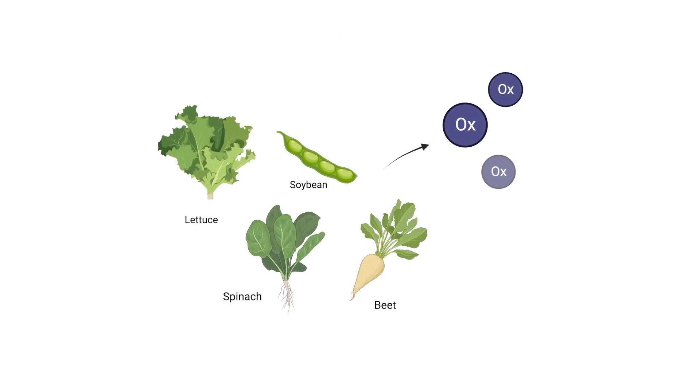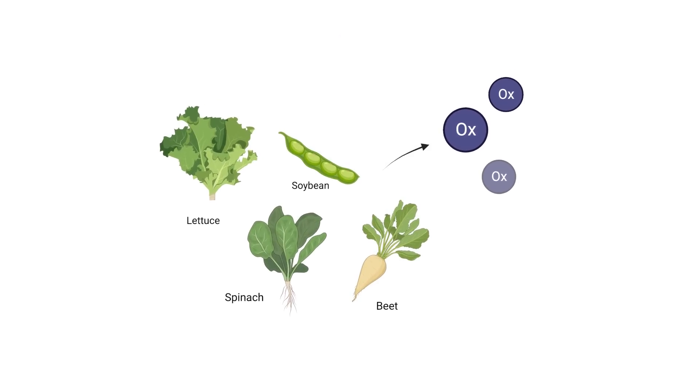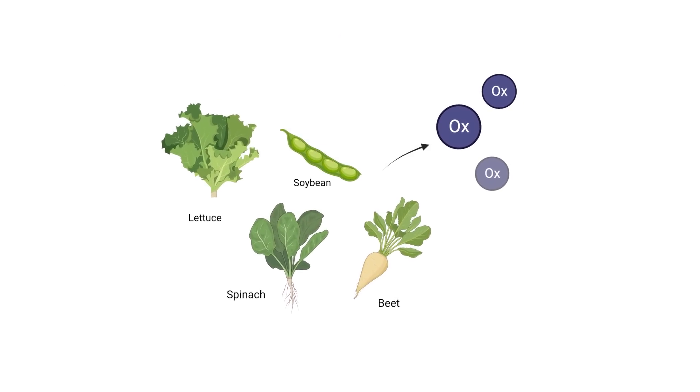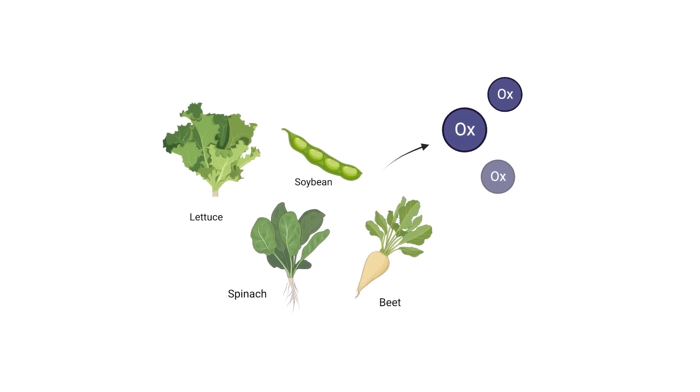Oxalates are predominantly found in plant foods, especially spinach, soy, sweet potatoes, and several more. There are a number of hypotheses as to why they exist, one of which being related to plant defense. I'm not a botanist, so I have absolutely zero clue if there's any truth to that claim. But in the end, it's all beside the point, because what we really care about is how it affects us.